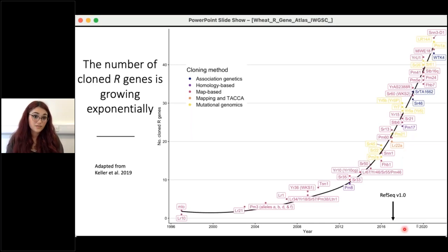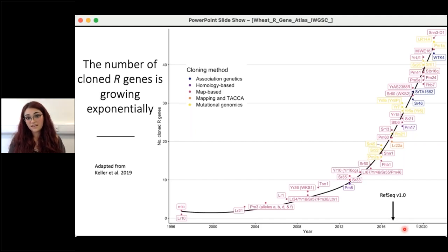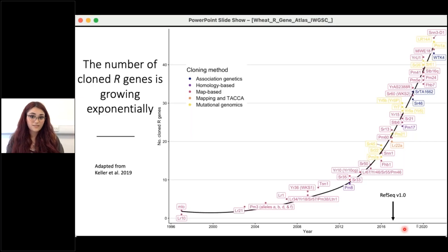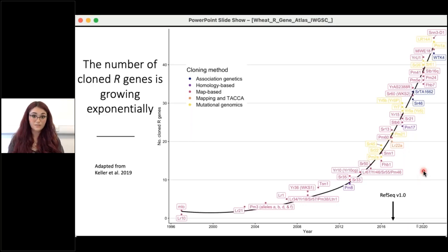Cloning is often driven by the publishing of new technologies, and as we clone more and more R genes in wheat, the impact of papers detailing newly cloned genes may start to fall. One way to maintain cloning momentum would be through an internationally concerted effort focused more on applications of these R genes to wheat breeding. As we approach cloning all genes for resistance to a particular disease, we can take a more systems biology perspective and answer fundamental questions about how disease resistance works in wheat.